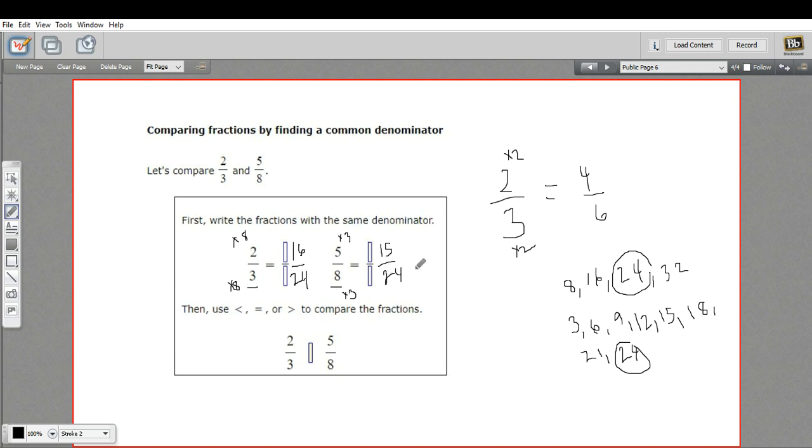So now I have the same denominator, so we can compare the tops directly. Sixteen twenty-fourths versus fifteen twenty-fourths. Sixteen is bigger than fifteen, so this fraction is bigger than this fraction. Which means that two-thirds is bigger, just by a little bit, than five-eighths. So that is how to find the common denominator so that you can compare fractions.